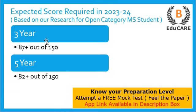Talking about the expected score required in the 2023-24 exam — if you are targeting this law college, for the three-year law program you need to score more than 87 marks out of 150, and for the five-year integrated law program you need to score more than 82 marks out of 150.